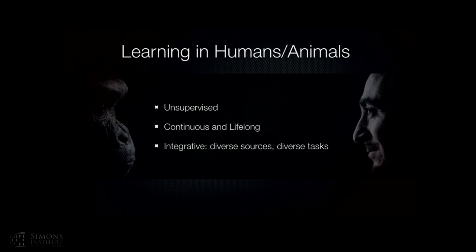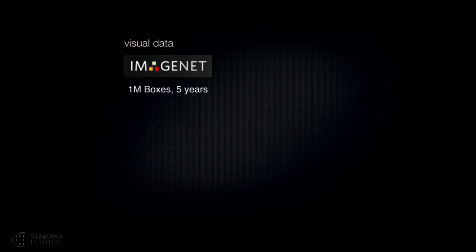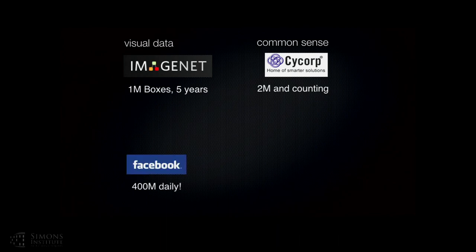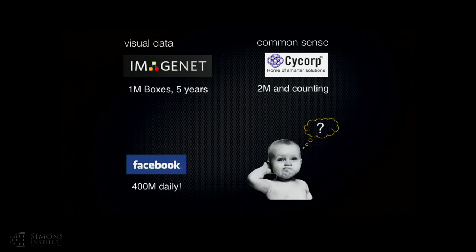But forget all those reasons. There's one another reason why current learning is just not going to be good enough: manual labeling is not scalable. For example, the biggest dataset in vision, which is ImageNet, has collected one million bounding boxes over a five-year period. CYC has two million common sense rules collected over 30 years. Compare this to Facebook, which has more than 400 million images uploaded daily. And for common sense learning, some people estimate there are billions or trillions of facts that we need to collect.